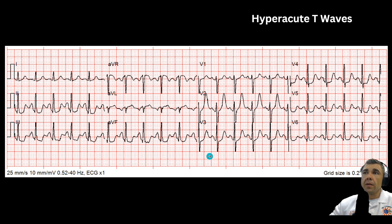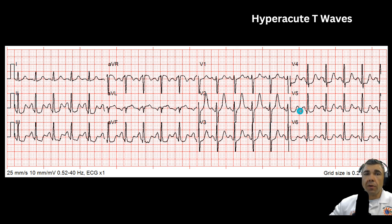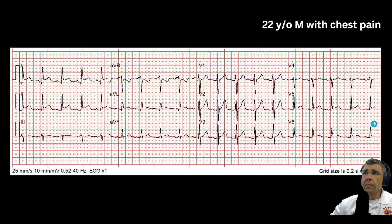Here's another example of hyperacute T-waves. These are a little bit narrower, so they almost look like hyperkalemic T-waves, but coupled with that ST depression, these are actually called DeWinter's T-waves. DeWinter's T-waves are J-point depression with hyperacute T-waves, especially in the anterior leads V2 and V3 — the anteroseptal leads. They are a STEMI equivalent, really, indicating the patient is going to have a significant MI if they're not already having it.